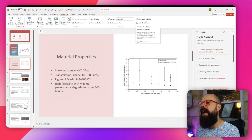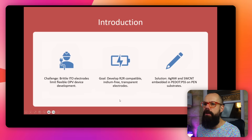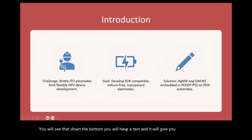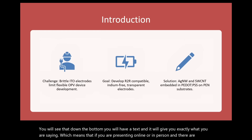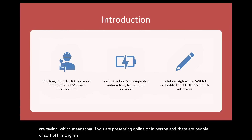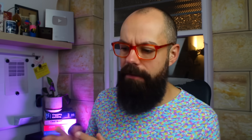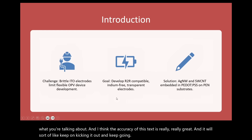The last thing you should know about is also on the Slideshow tab — AI-powered subtitles. Click 'Always use subtitles,' and when you go into presentation mode, you'll see a text readout at the bottom showing exactly what you are saying. If you are presenting online or in person and there are people with English as a second language or who are hard of hearing, they'll actually be able to see what you're talking about. The accuracy of this text is really, really great.